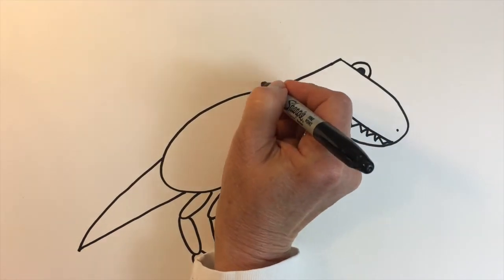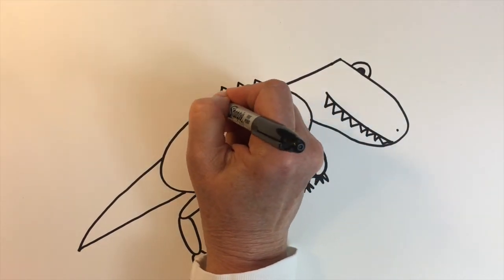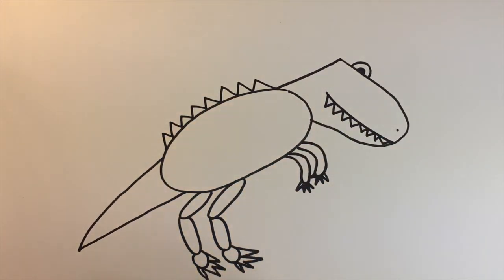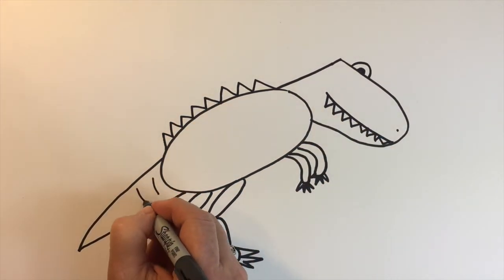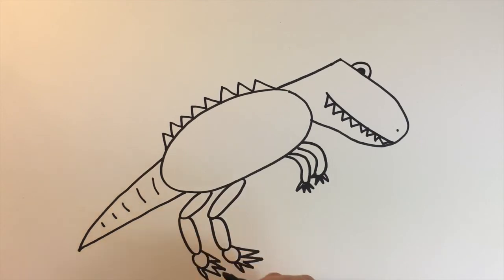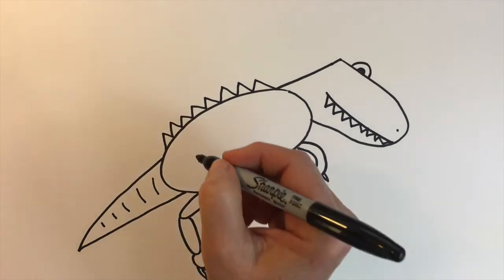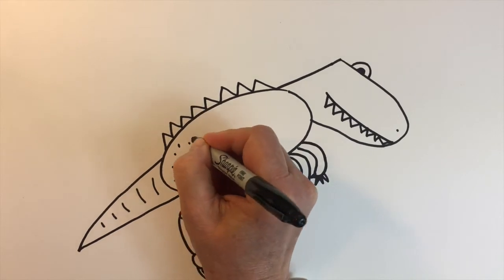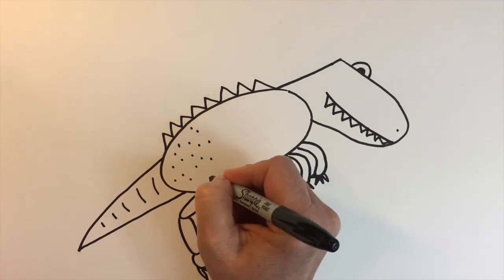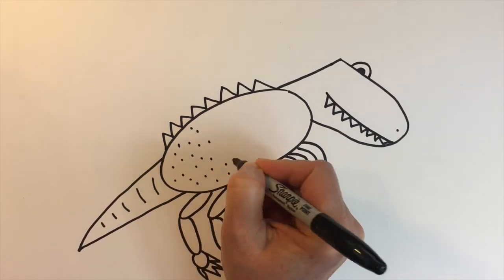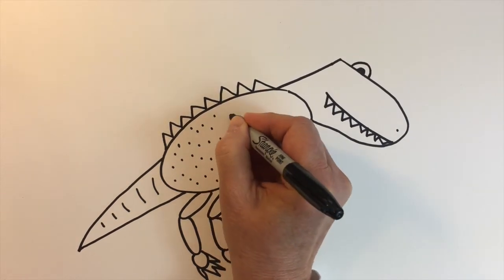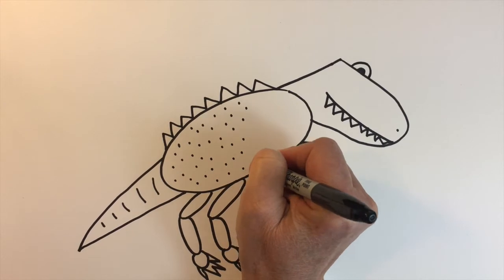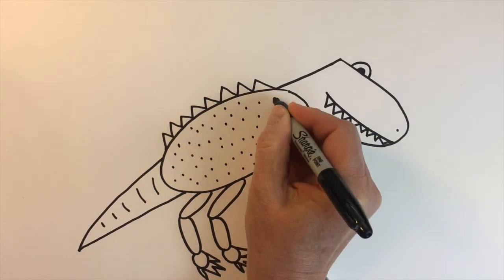And let's create some zigzags for the plates on his back. This is actually a T-Rex, isn't it? I don't know all my dinosaurs, but I do know this is a T-Rex. And we'll place just some markings inside for our texture to show that our dinosaur has scales.